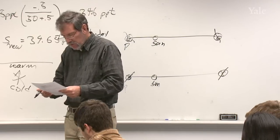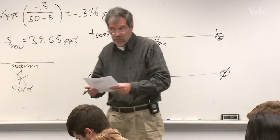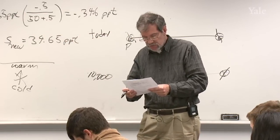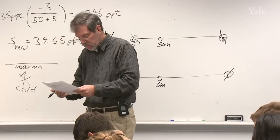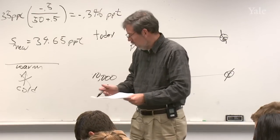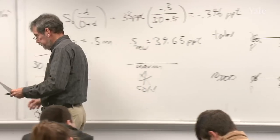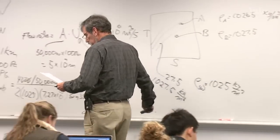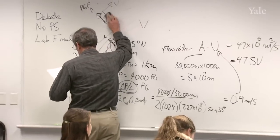In the Arctic, sea ice is rapidly decreasing. In the southern ocean, it's approximately constant by the measure I've just described.